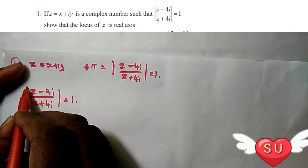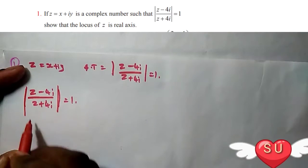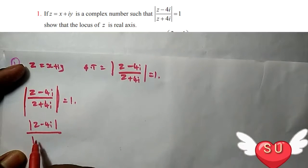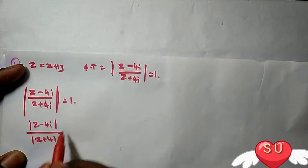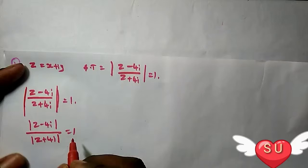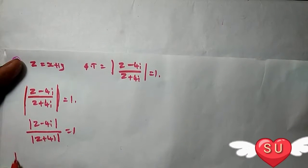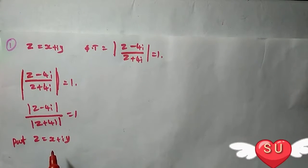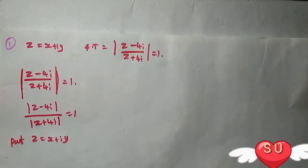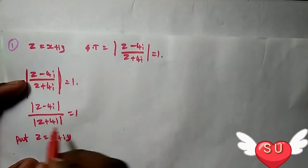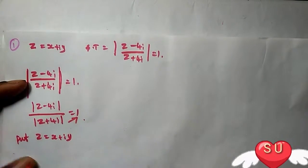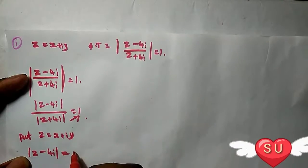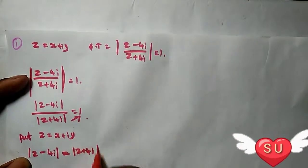Using the property, this becomes modulus of (z - 4i) equals modulus of (z + 4i). Let z = x + iy. So we can write (z - 4i) equals (z + 4i).